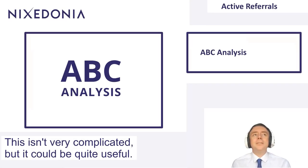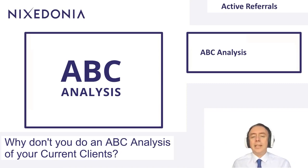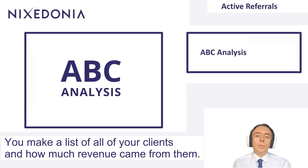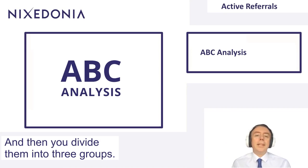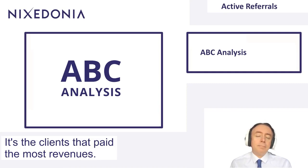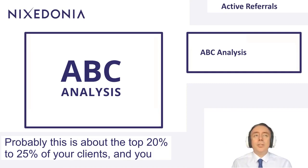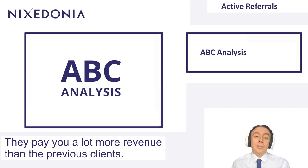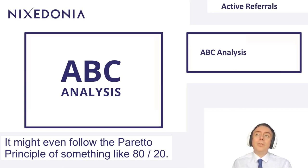Here's a really cool idea — it's not very complicated but it could be quite useful. Do an ABC analysis of your current clients. Look at the financial results from last year, make a list of all your clients and how much revenue came from them, then divide them into three groups. The A group is the clients that paid the most revenue, probably the top 20 to 25 percent, and you'll find they disproportionately pay a lot more — it might even follow the Pareto principle, something like 80/20.